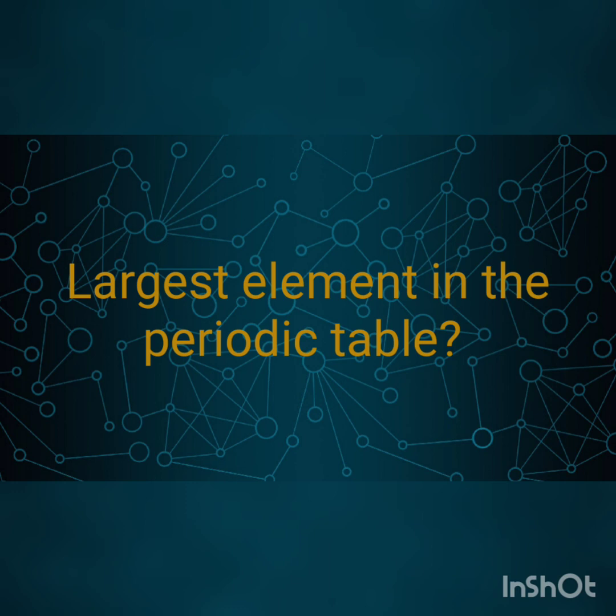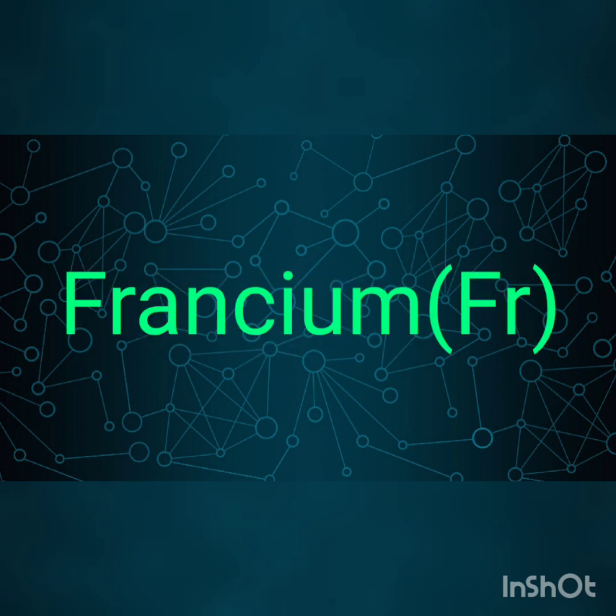Question number 7: Which is the largest element in the periodic table? Francium. Francium has atomic number 87 and belongs to group 1, that is, the alkali metals.